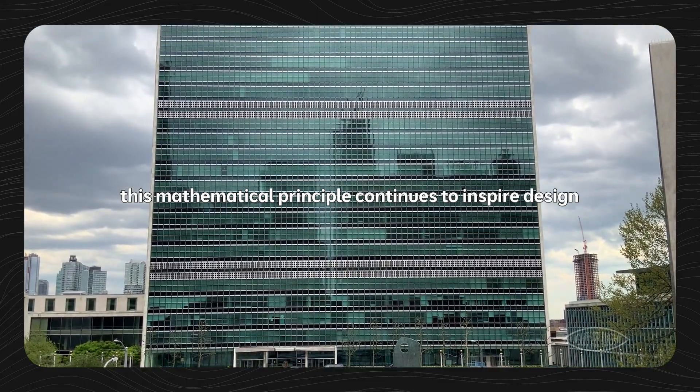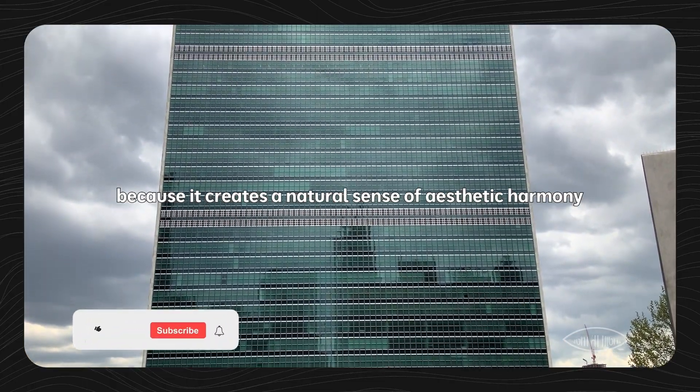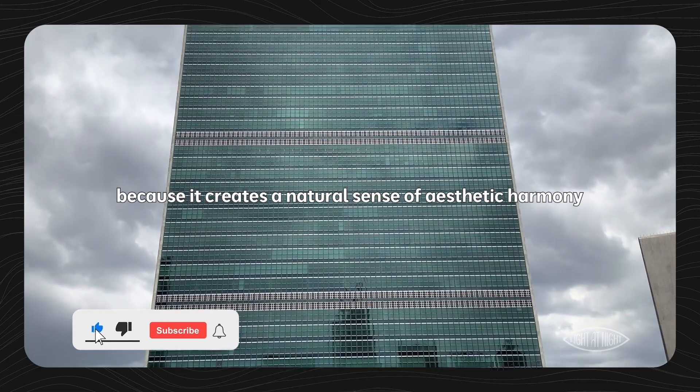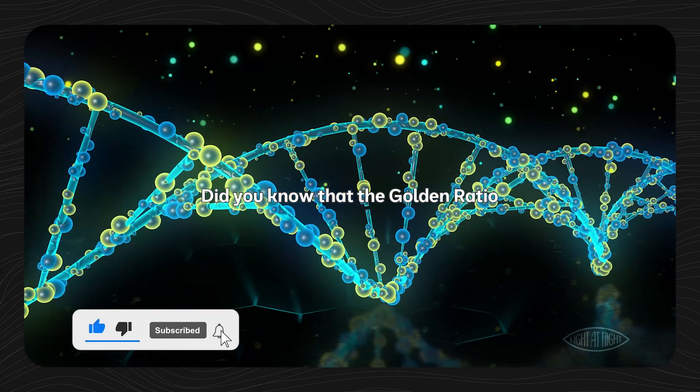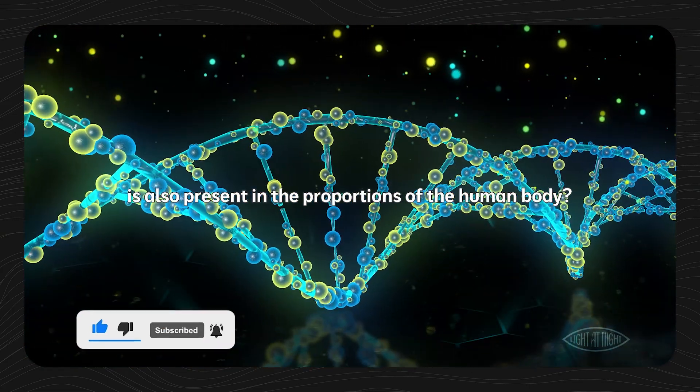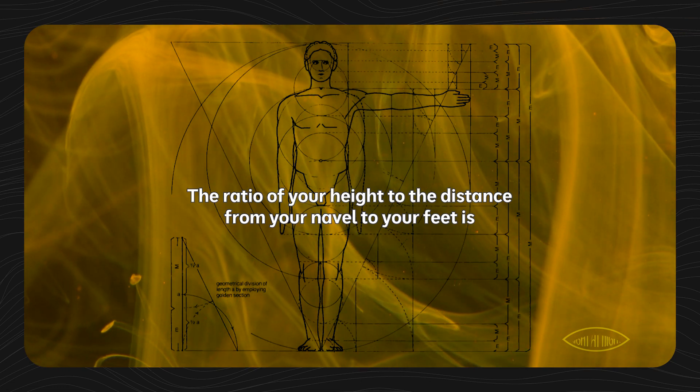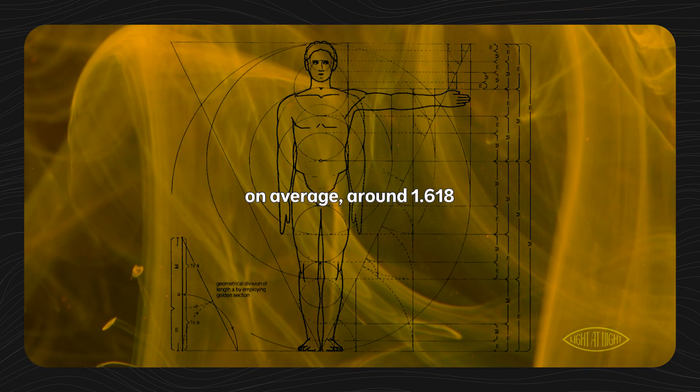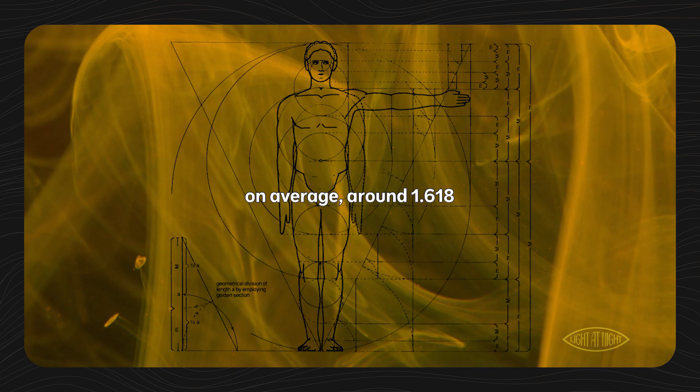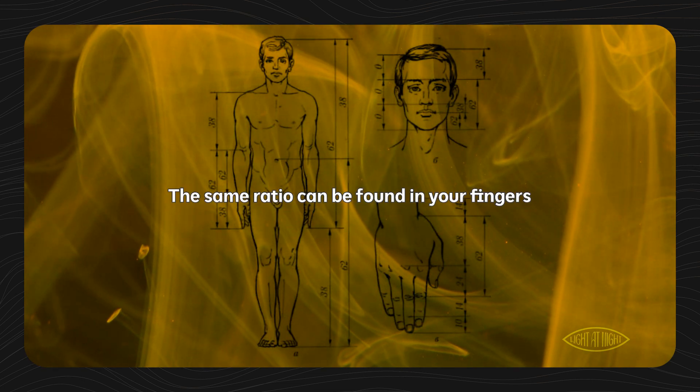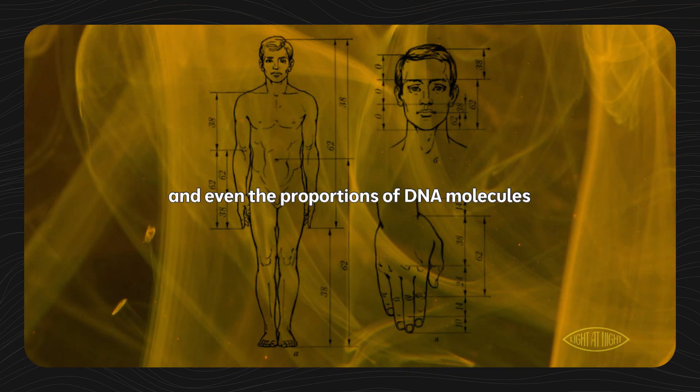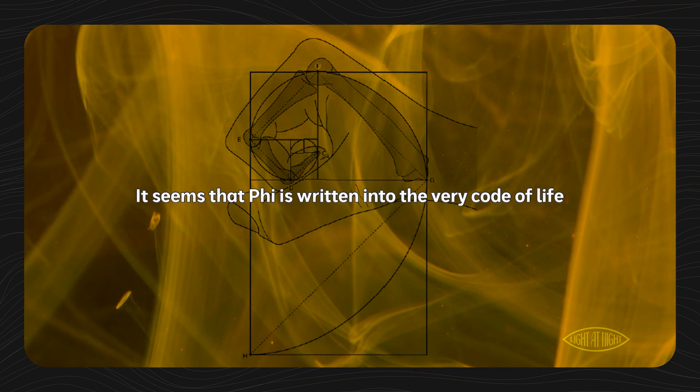This mathematical principle continues to inspire design because it creates a natural sense of aesthetic harmony. Did you know that the golden ratio is also present in the proportions of the human body? The ratio of your height to the distance from your navel to your feet is, on average, around 1.618. The same ratio can be found in your fingers, your face, and even the proportions of DNA molecules.